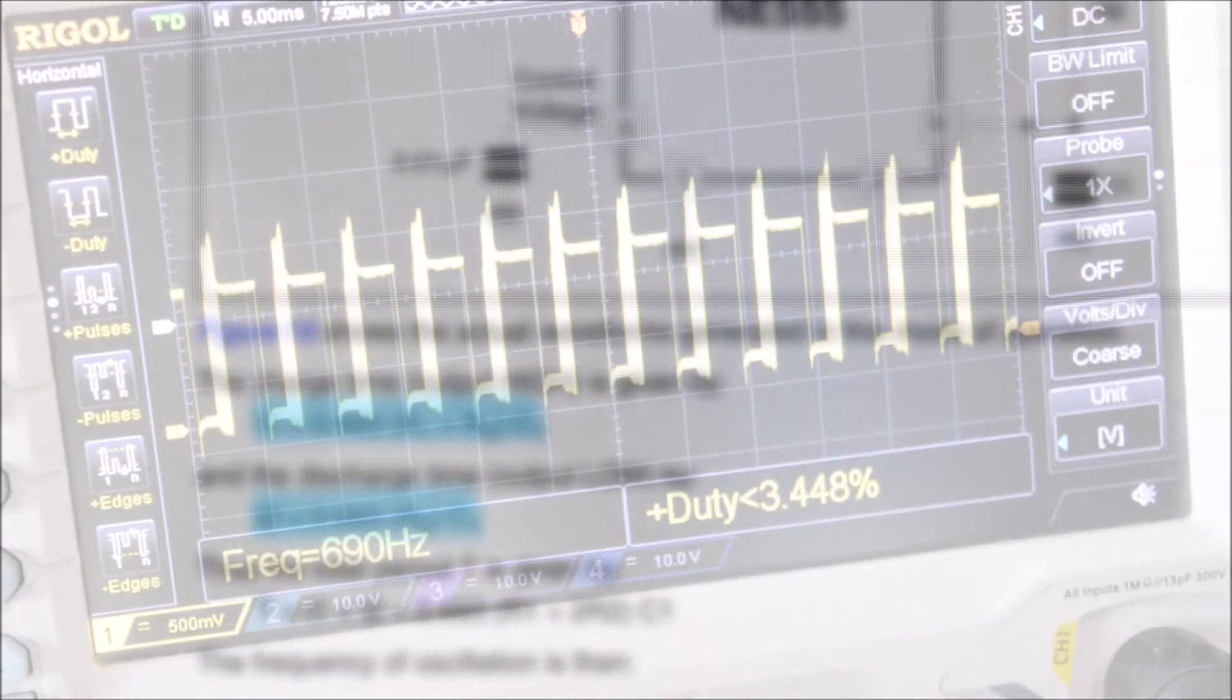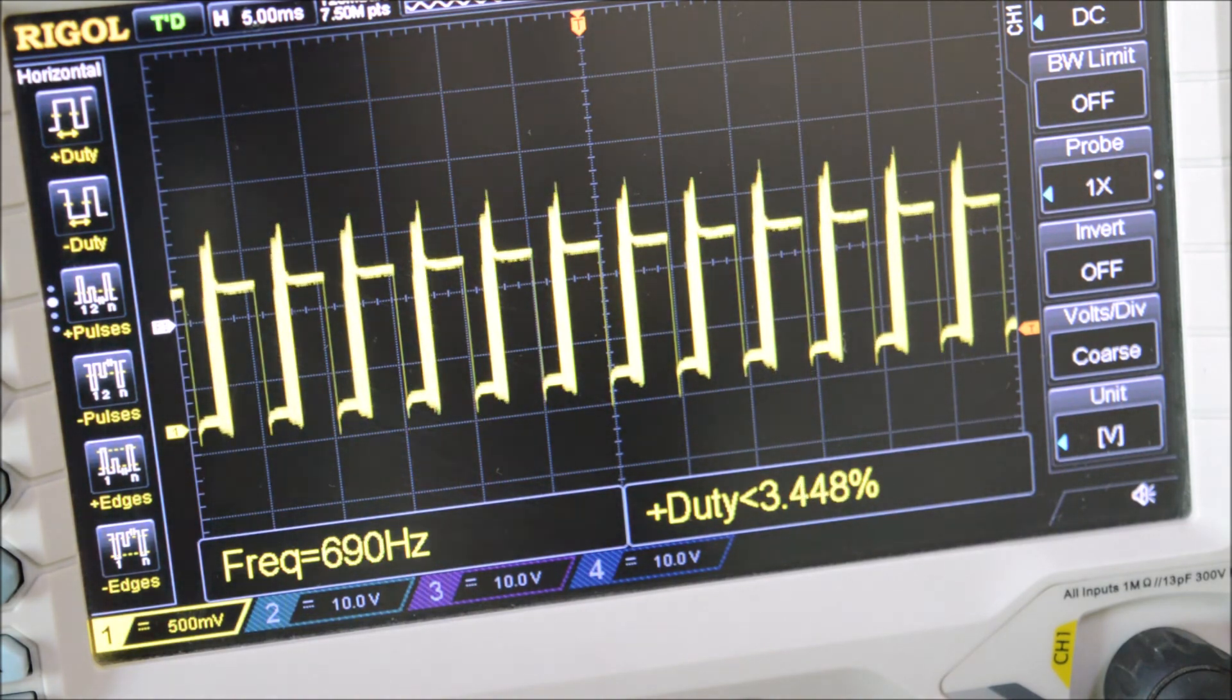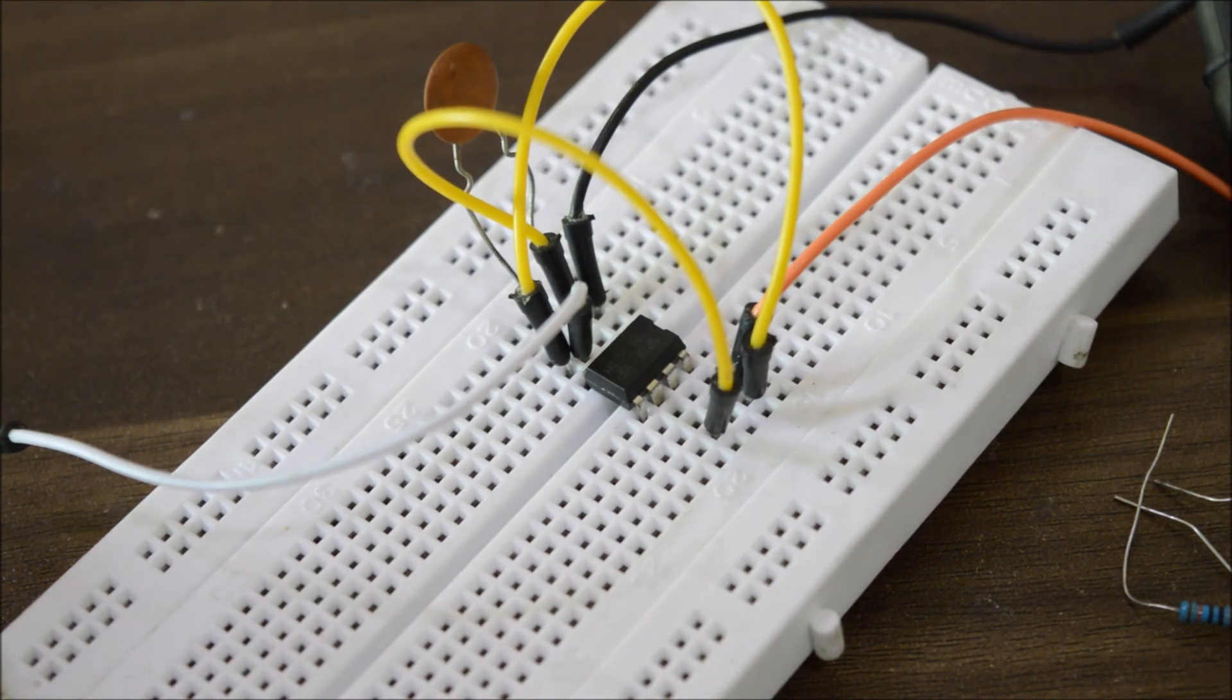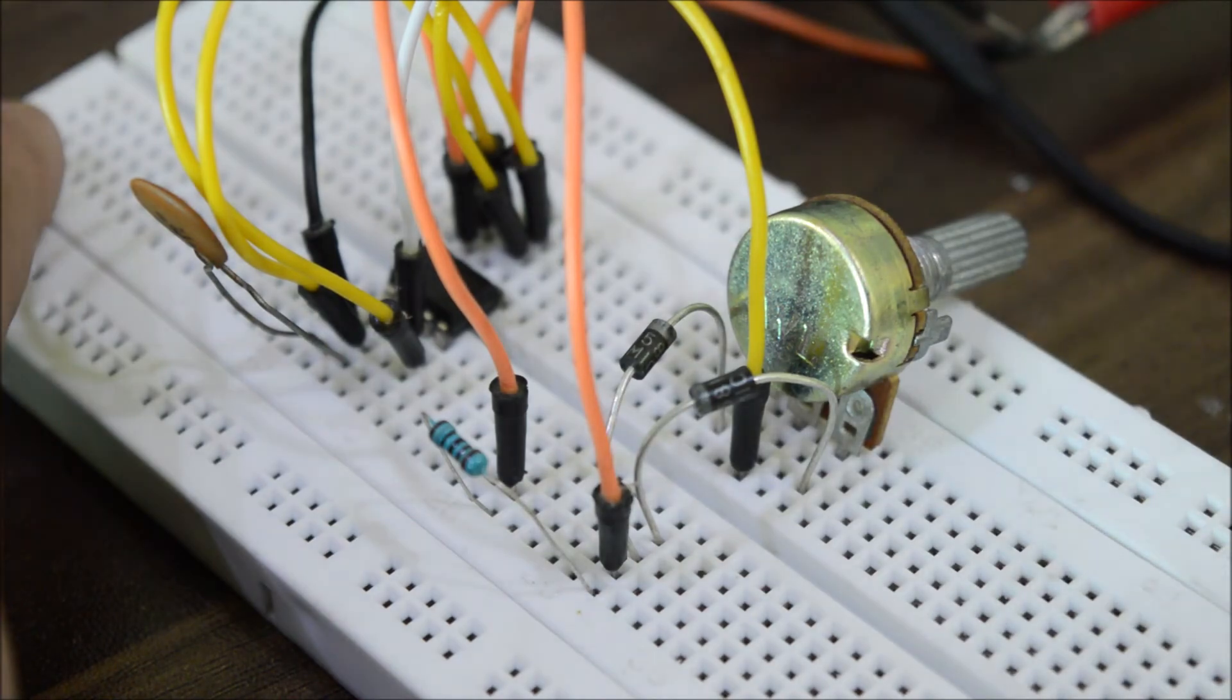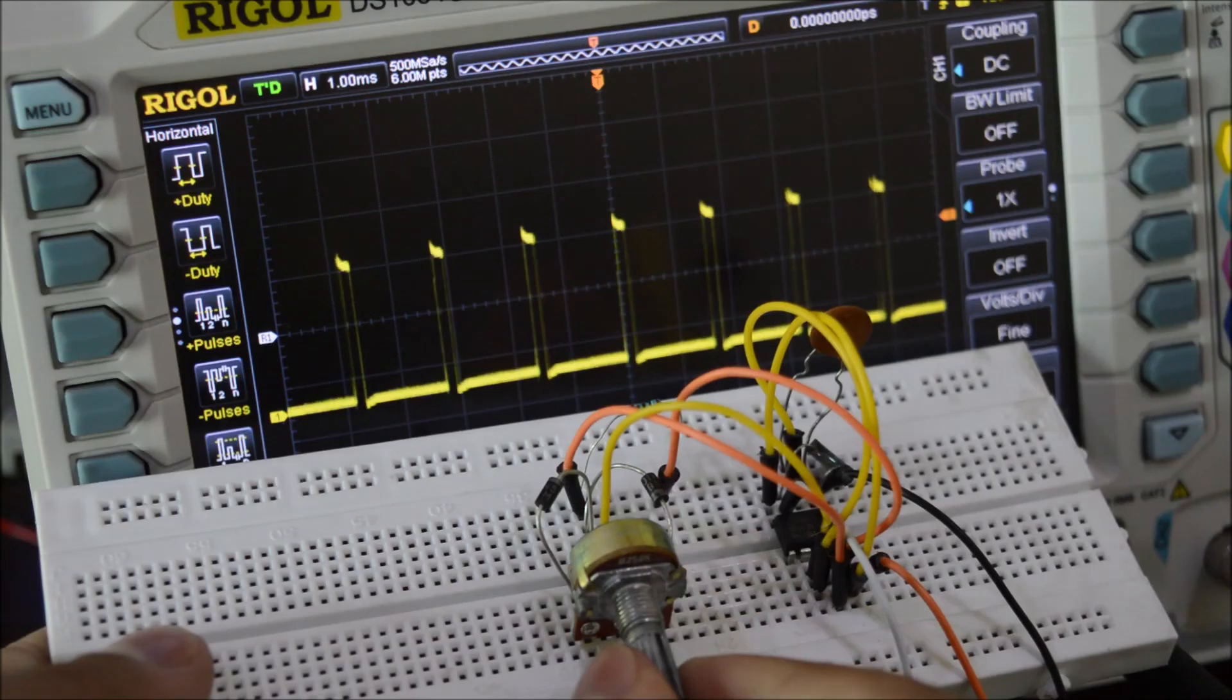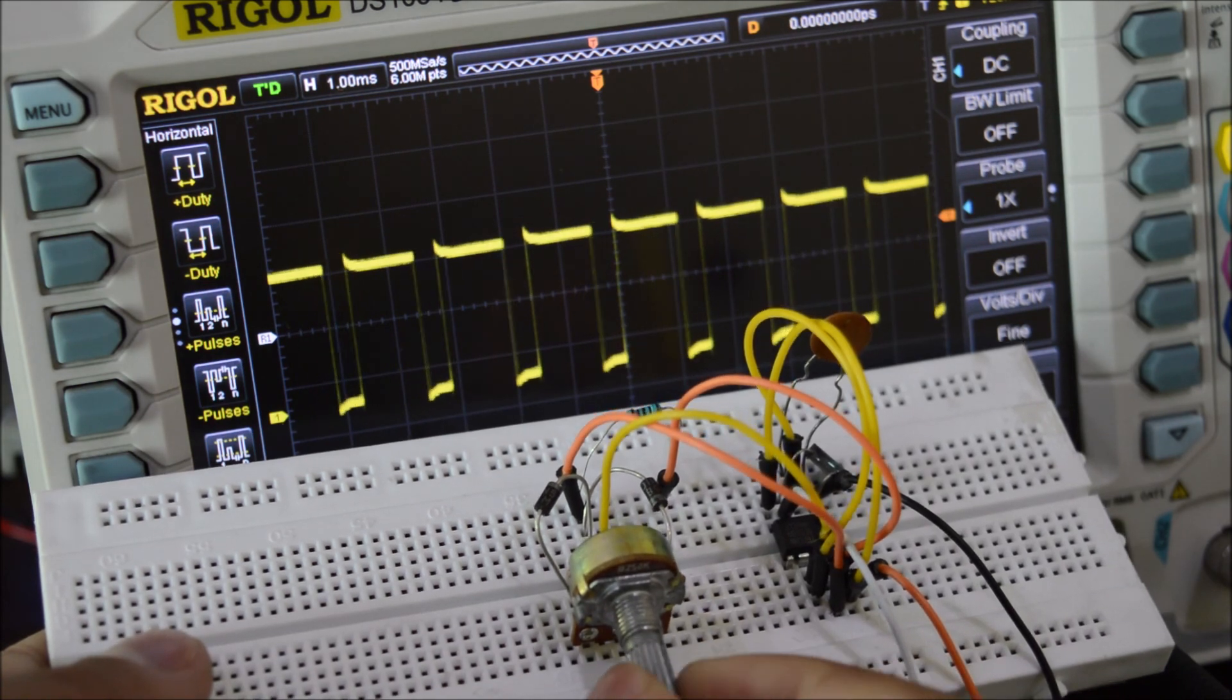But, sadly, this design cannot produce smooth PWM signal with a constant frequency. So, to improve the circuit, we can remove those R1 and R2 resistors and add a potentiometer and also two diodes to direct the charging current only through R1 and discharge current direct to the pin number 7. Now, this potentiometer is used to increase the charging or discharging time and thus create a beautiful looking PWM signal with a variable duty cycle.